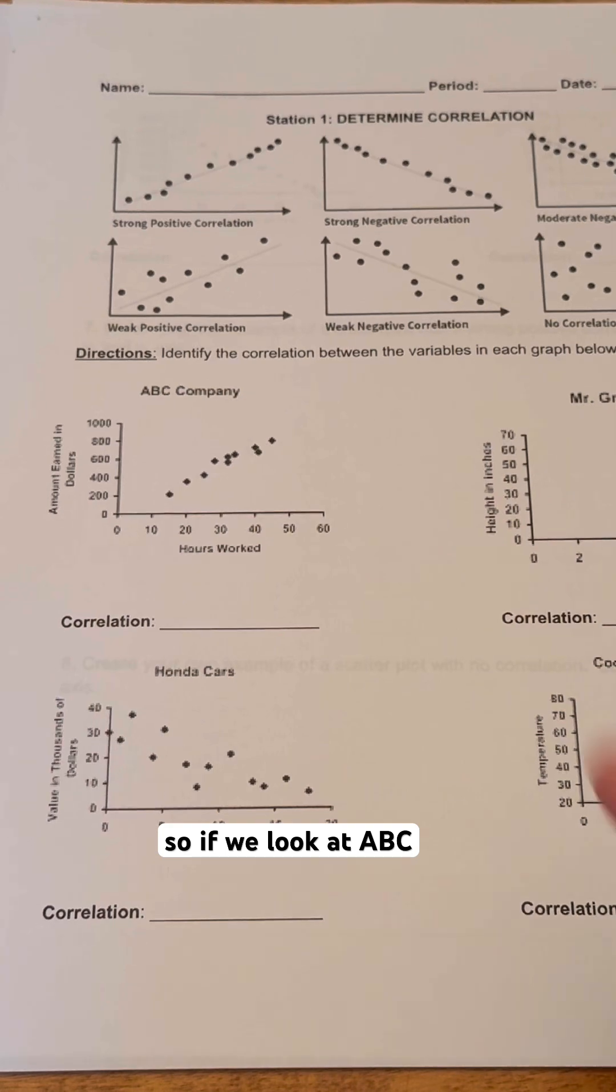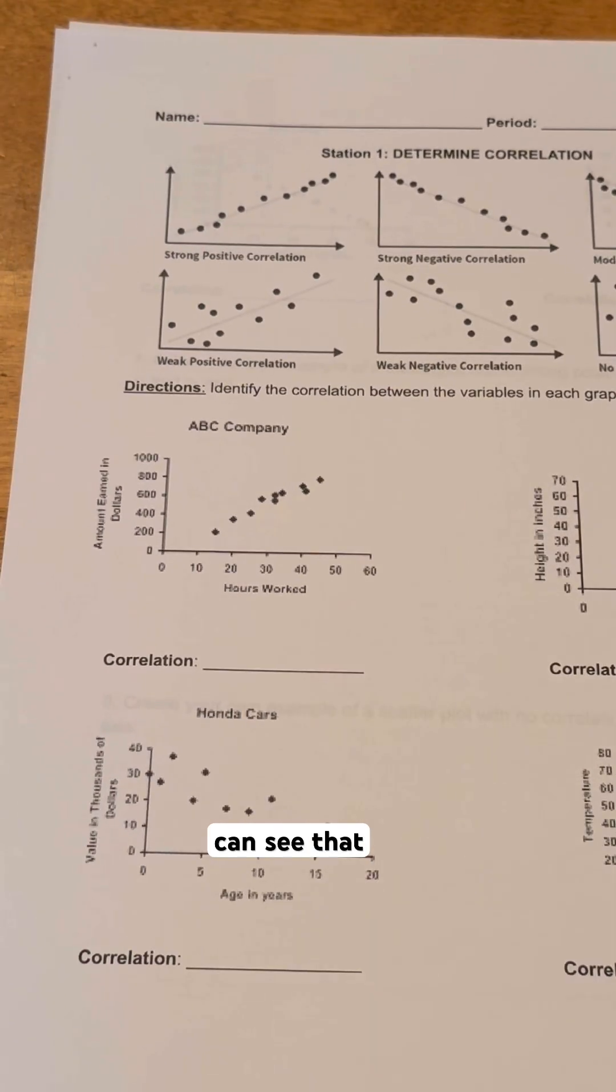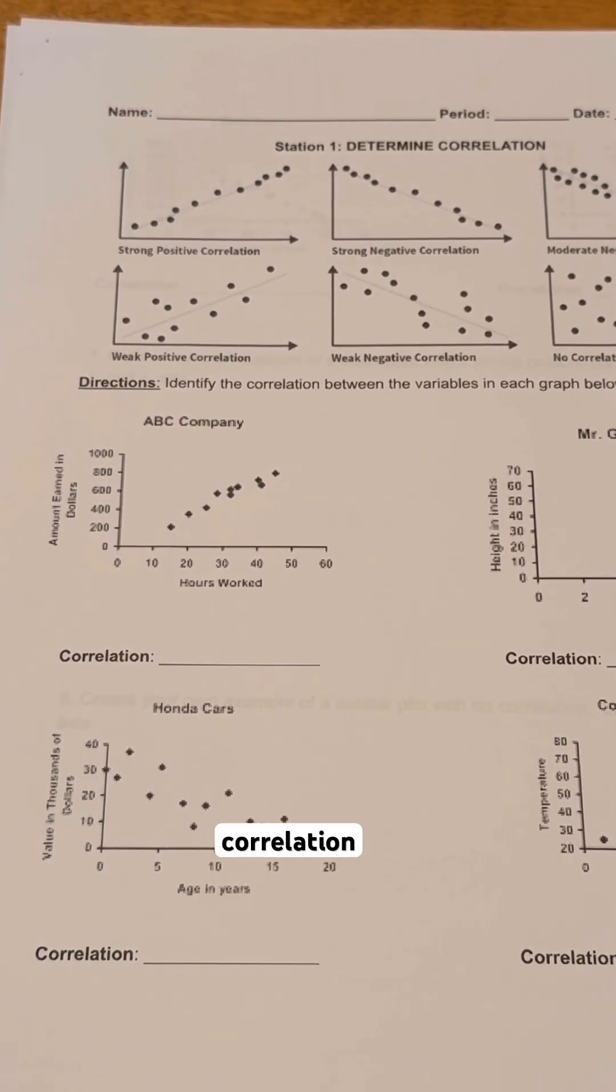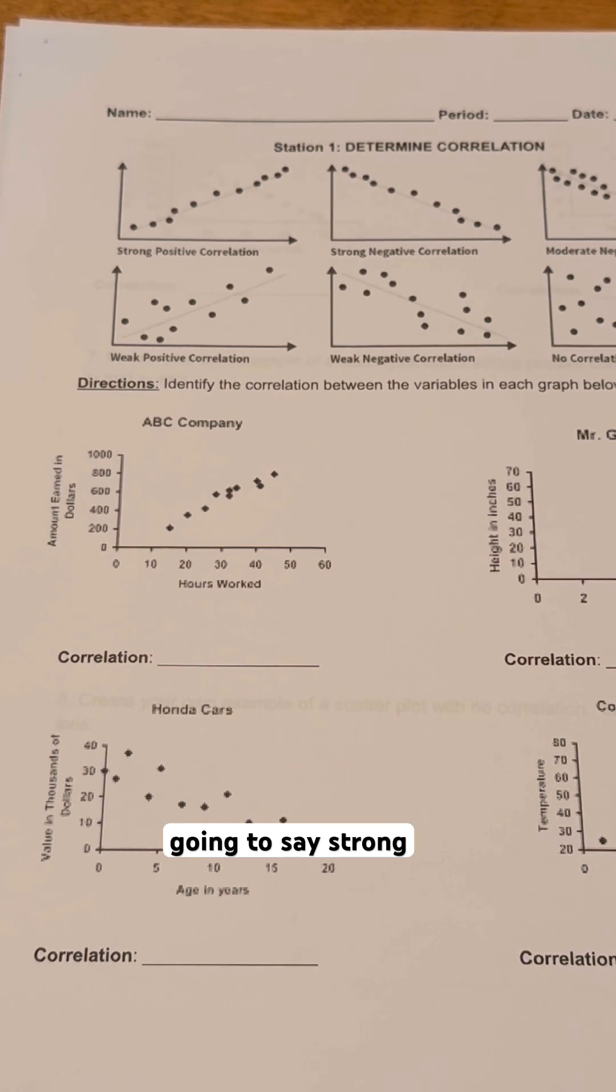If we look at ABC Company up here, we can see that as the hours worked are going up, earnings are also going up. We can see that's a pretty strong positive correlation. So we're going to say strong positive on that one.